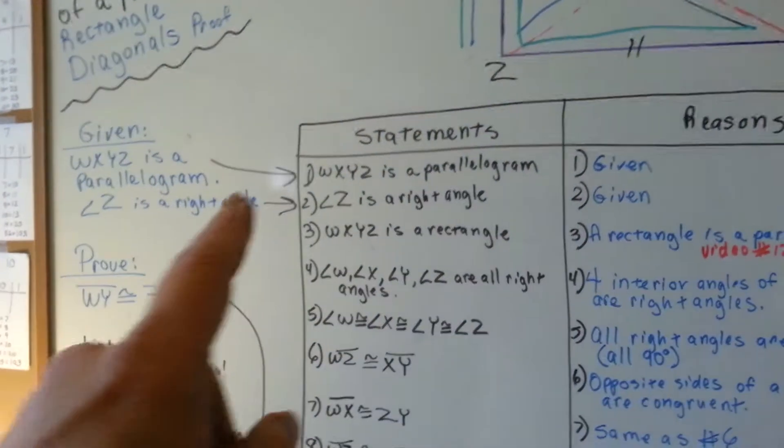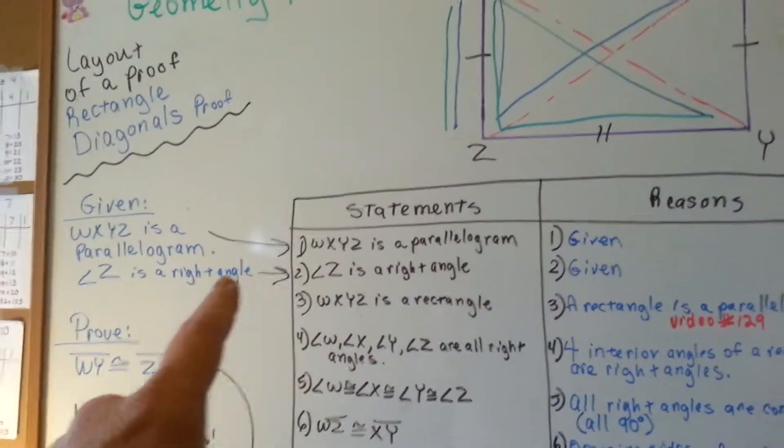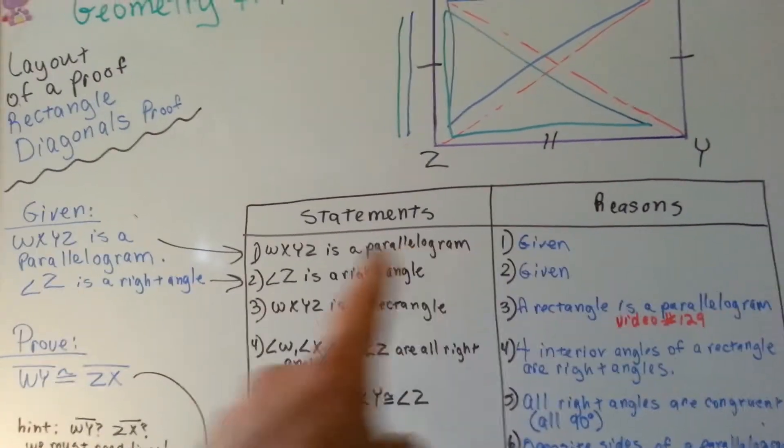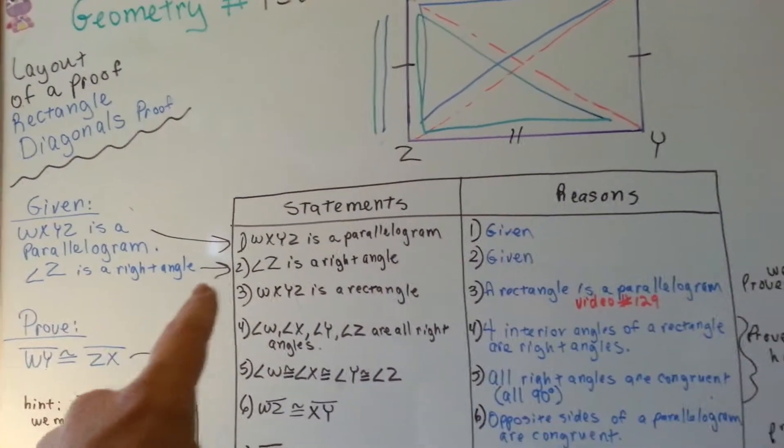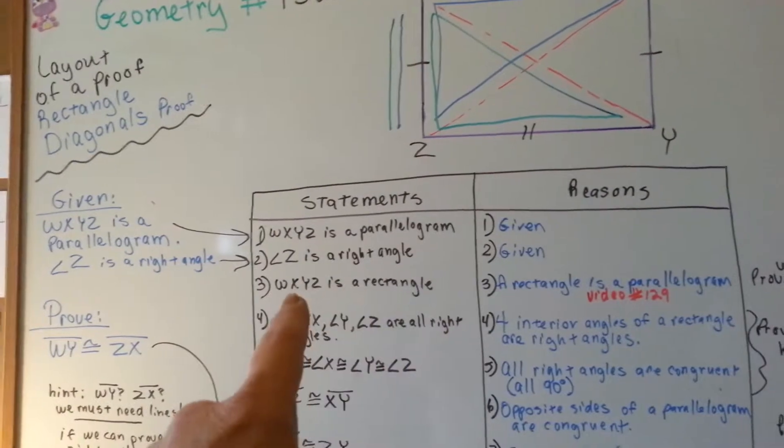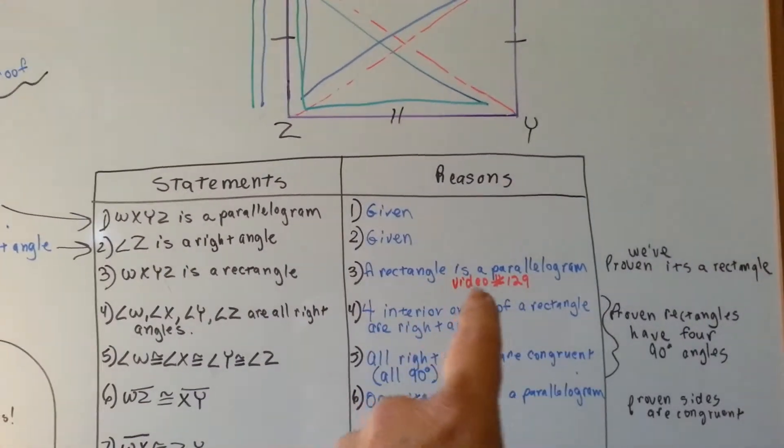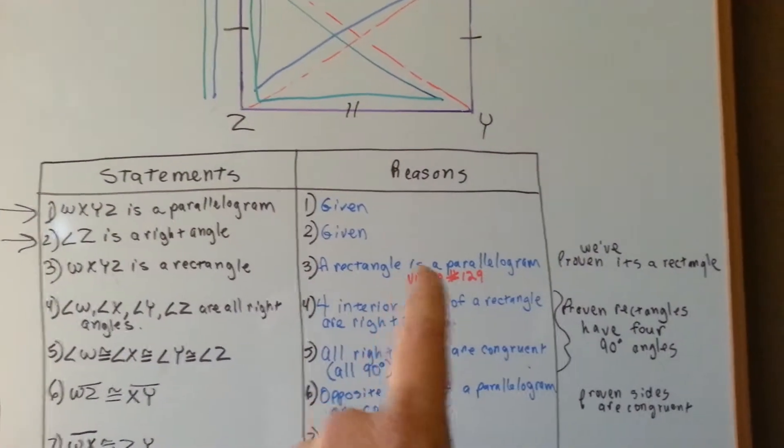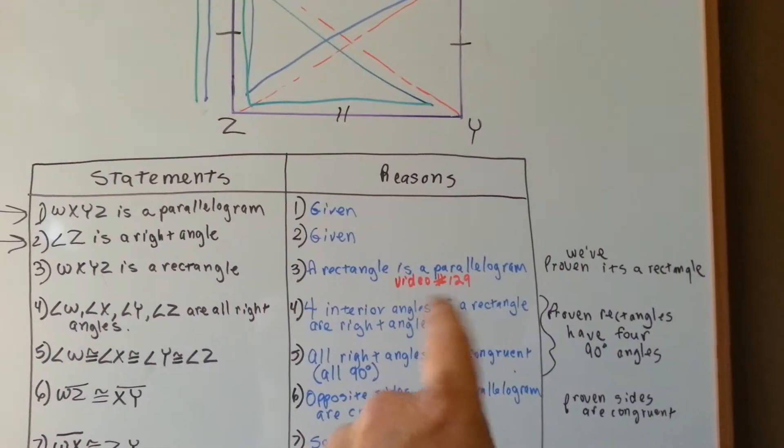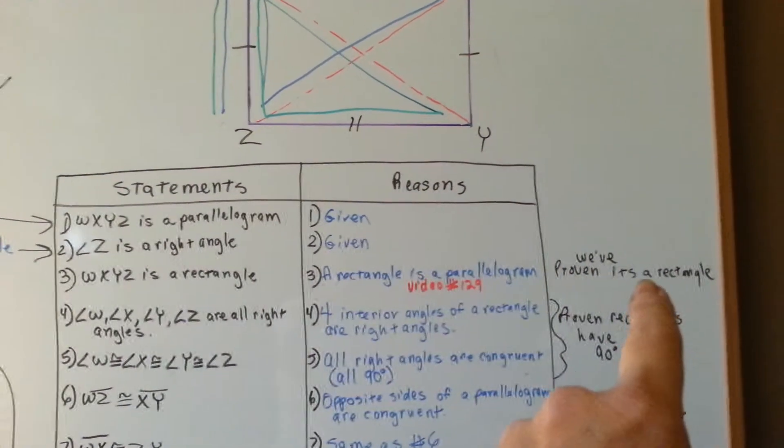So, it says that WXYZ is a parallelogram, and that was given, and that angle Z is a right angle, that was given. So, we can say that WXYZ is a rectangle, because a rectangle is a parallelogram. If you want to know more about this, see video number 129. So, now we've proven it's a rectangle.